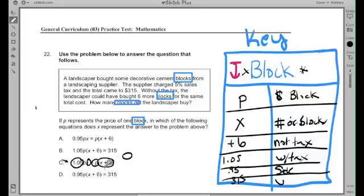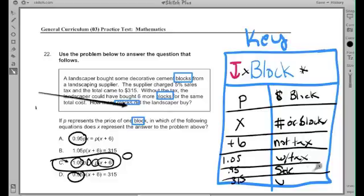Why can we eliminate some of these others real quick? You see the 0.95? That's referring to a sale. And in the word problem there's nothing about a sale here, right?